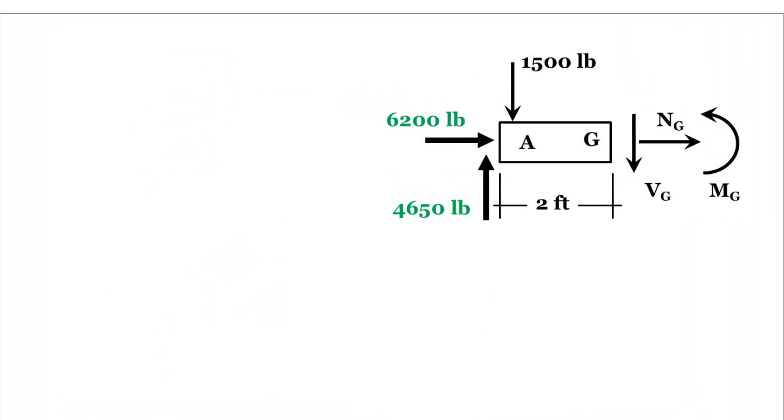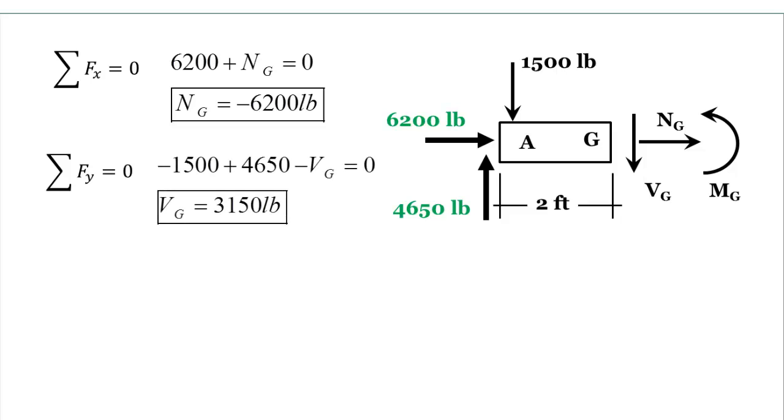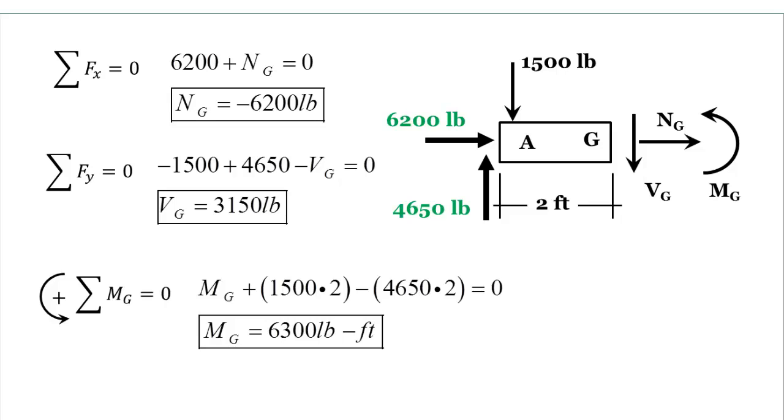All I need to do now is get the summation of the forces in the X. If I do this I can solve for NG to be negative 6,200. And if I do the summation of the forces in the Y, I can get VG to be 3,150. And if I do the summation of the moments about point G and solve for MG, I will get 6,300 pounds foot.